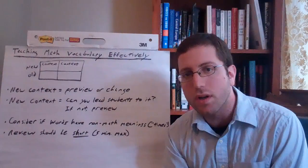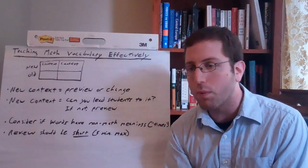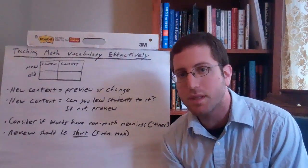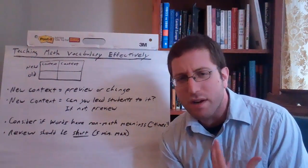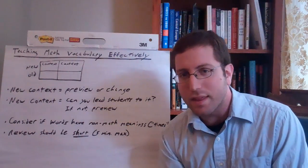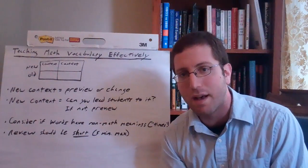Those may be unfamiliar words in this example. And if that's the case, then it's actually really important that we're previewing those words for students to begin with. Even though they're not math-specific words, because if students are trying to figure out what in the world a field of grain is, they're not thinking about perimeter, they're not thinking about the math. They're getting tripped up by the context of the problem itself.